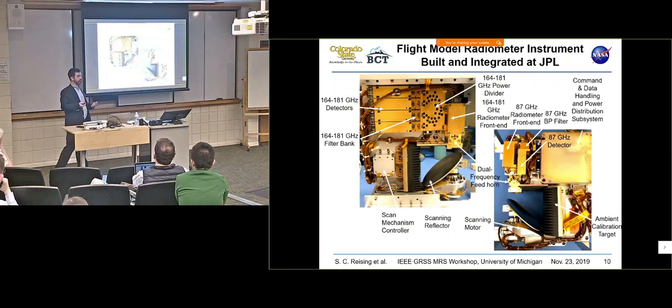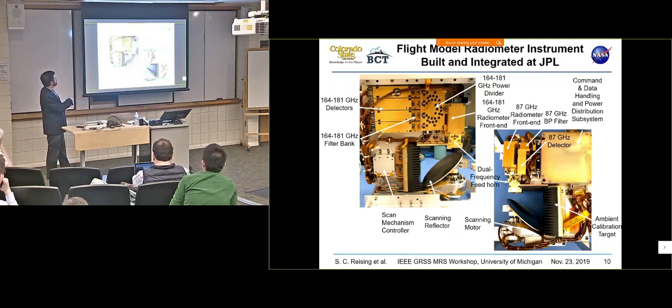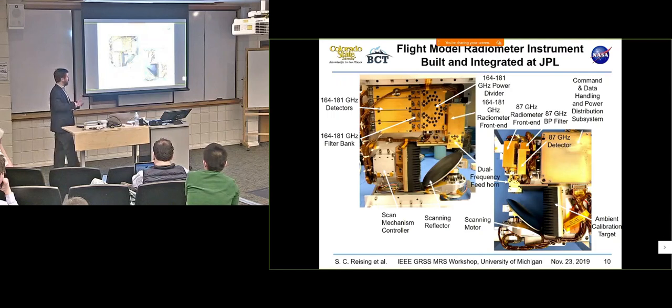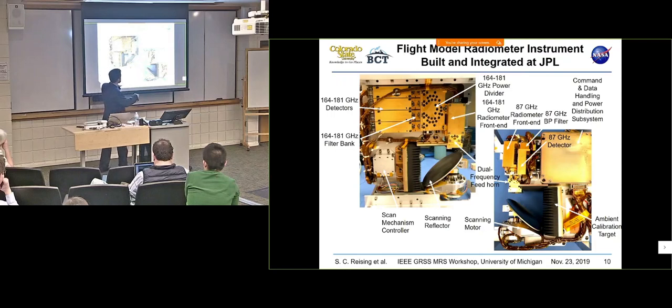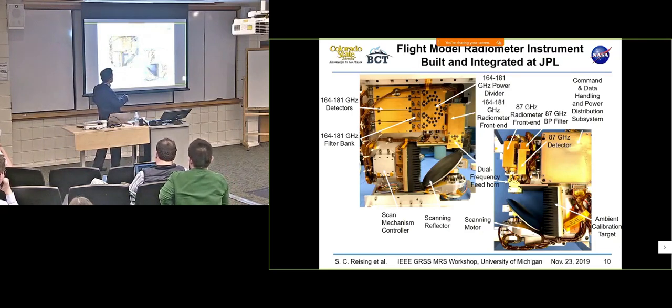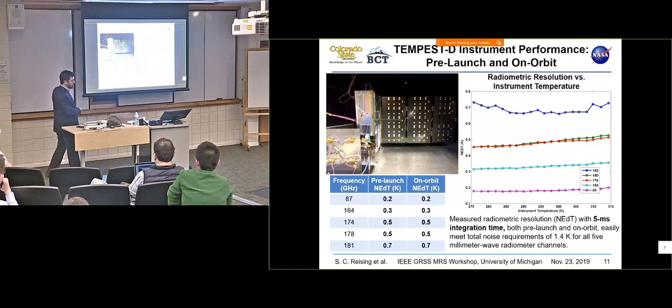The feed horn has two waveguide outputs, one at G band here for 164 to 181 gigahertz and the other one over here on the right at W band. And the low noise amplifiers are in the radiometer front end, but they're also in the power divider to compensate for the insertion loss. And then we have a filter bank of four waveguide iris-based filters and four detectors. So all five of these channels are fed into the command and data handling unit.